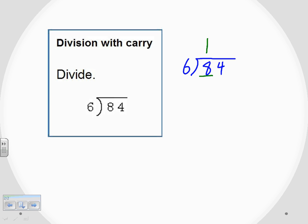Then we multiply the one on the top times the six out in front, gives us six. I put that below the eight, lining up the right hand side here. And that eight and six, I'm going to subtract.